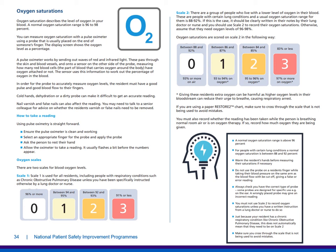To summarise: a normal oxygen saturation range is above 96 percent. For people with certain lung conditions, a normal oxygen saturation is between 88 and 92 percent. Warm the resident's hands before measuring their saturations if necessary. Do not use the probe on a resident's finger whilst taking their blood pressure on the same arm, as the blood flow will be cut off giving a false reading. Always check that you have the correct type of probe — some are designed for specific use, such as on the ear, and a wrongly placed probe may give an incorrect reading. You must not use scale two unless you have a written instruction from a lung doctor or nurse, and make sure you cross through the scale that is not being used. If you're concerned, even if the score isn't particularly worrying, still pass on those concerns to a senior colleague or manager.